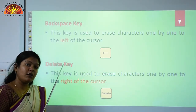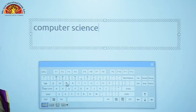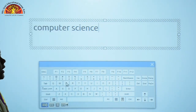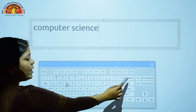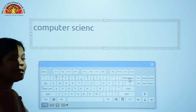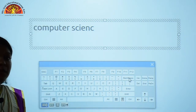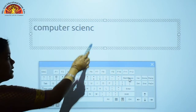Now we will see the practical of the Backspace key and the Delete key. Here I have typed the text 'Computer Science.' We will see how the Backspace key works. Here you can see this is my cursor. When I press the Backspace key, you can see it erases the character from the left side of the cursor.